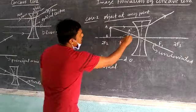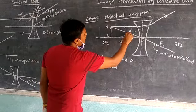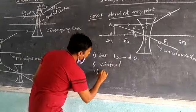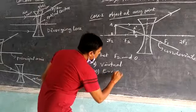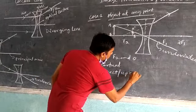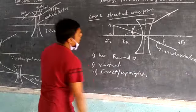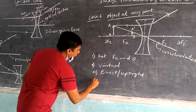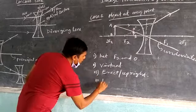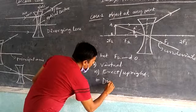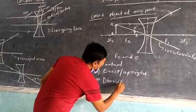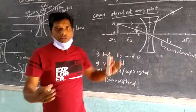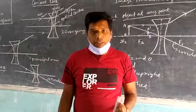Because these two rays are not actually intersecting but only appear to meet, the image is a virtual image. Since it is virtual, it is also an erect or upright image. The size of the image is diminished compared to the object. We will continue in the next video.